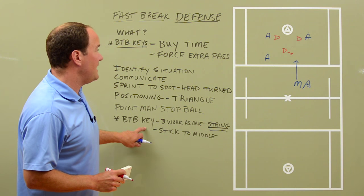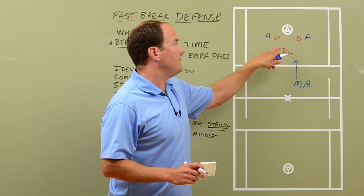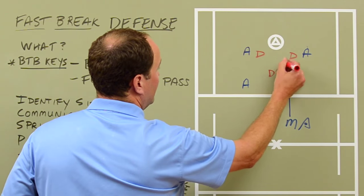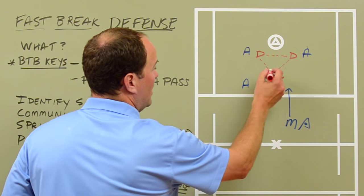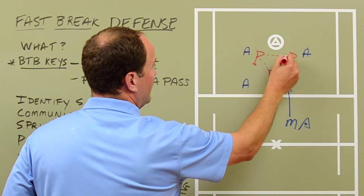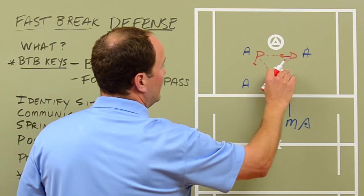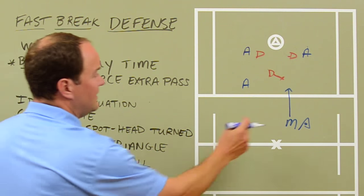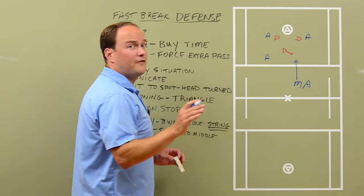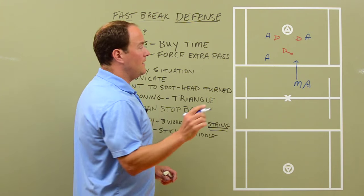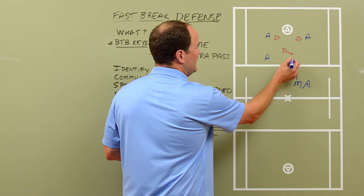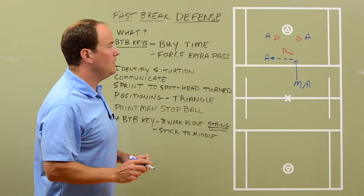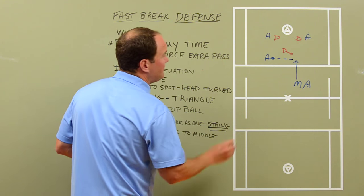Some other BTB keys to keep in mind: these three defenders work as one. You can imagine they're all attached by a string. So as one moves, they're all going to move a little bit. The midfielder offensively is carrying the ball into the box, and the first look for an offensive midfielder — 95 to 100% of the time — is going to be to the point attackman. That's what they're all taught to do: pass to the point attackman.